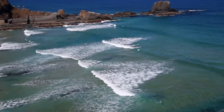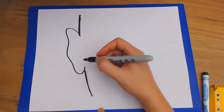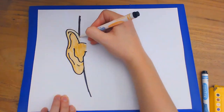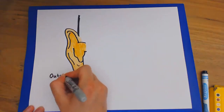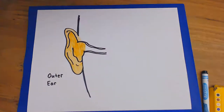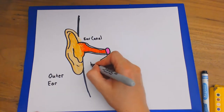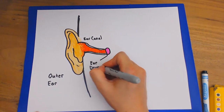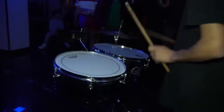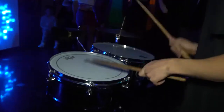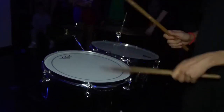When waves of particles reach your face, your outer ear acts like a funnel and directs the particles into your ear canal towards your eardrum. Eardrums are special built-in instruments that you carry around with you everywhere you go. Much like hitting a drum with a drumstick, waves of particles hit your eardrums and cause them to vibrate.